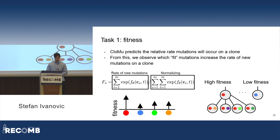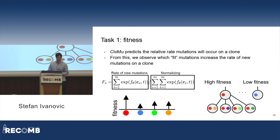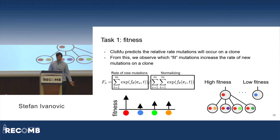Now we move on to prediction tasks. The first thing we predict is fitness. CLOMU predicts the relative rate at which mutations will occur on a clone. From this, we observe which fit mutations increase the rate of new mutations on a clone. We can see a red mutation likely undergoing some sort of clonal expansion, with many mutations then occurring on that clone as it grows because it's highly fit. In blue, we have a mutation that's not very fit — it's not growing, and no more mutations are occurring.